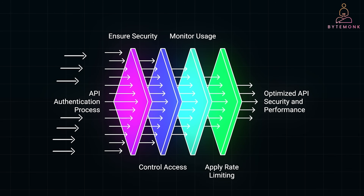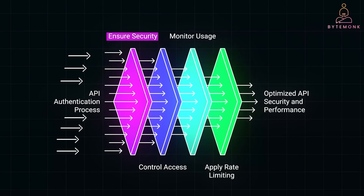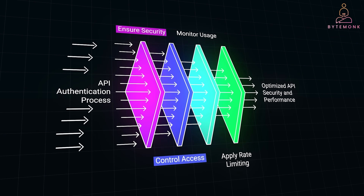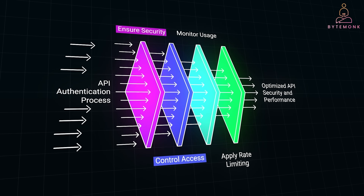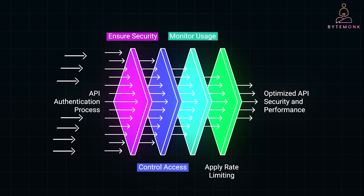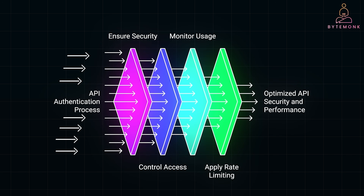The primary benefit of API authentication is, of course, security. It ensures that only authorized clients can access the API, reducing the risk of malicious attacks, data breaches, or unauthorized access. It also allows API providers to control access based on the user's identity — different clients can have different permissions, ensuring that users only access data or services they are authorized for. When clients authenticate, the API provider can track who is accessing the API and when, which is useful for auditing purposes and understanding usage patterns. And by knowing which user or client is accessing the API, you can apply rate limits or throttle access to ensure the API isn't overwhelmed by too many requests from a single source.